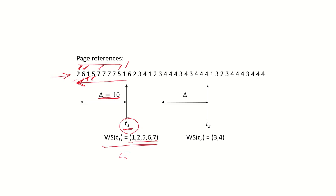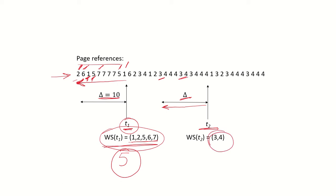At time t1, the working set is {1, 2, 5, 6, 7}, meaning the process needs at least 5 frames so that these working set pages can be accommodated; otherwise the process will start having page faults. At time t2, checking the previous 10 references may show references only to pages 3 and 4, so the working set changes and the process now requires a minimum of 2 frames. By looking at the working set, the system can determine the minimum frames needed at any point in time.